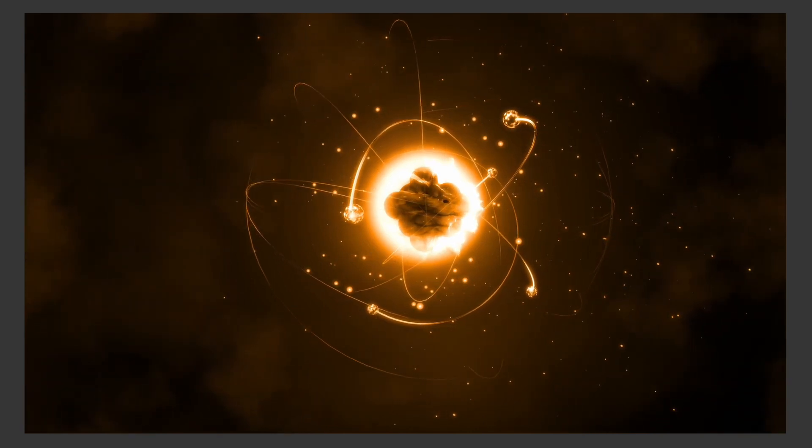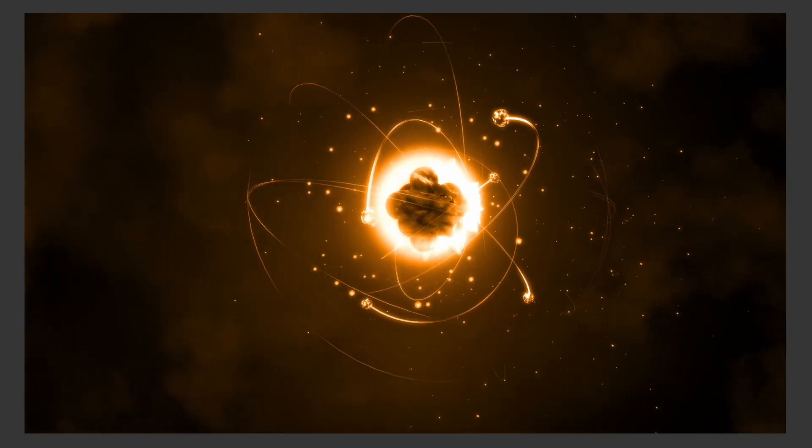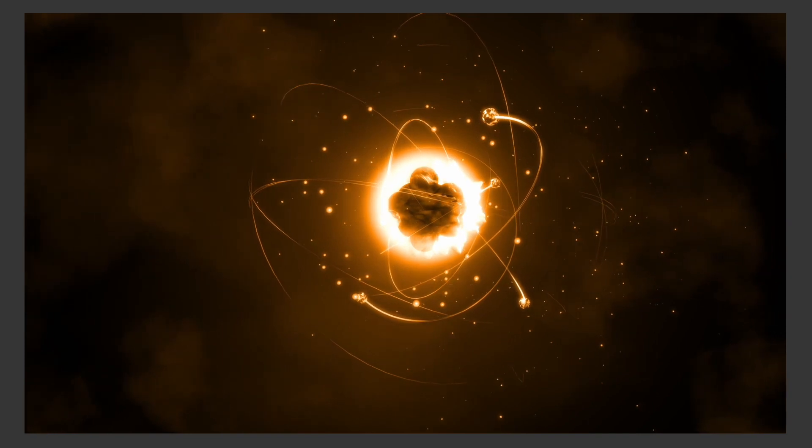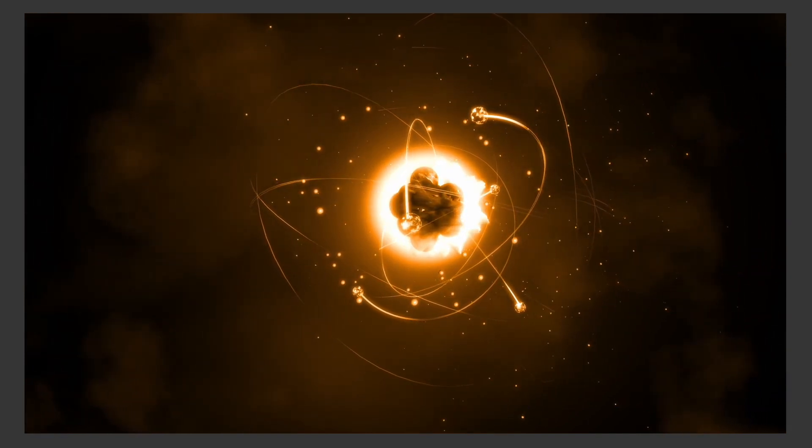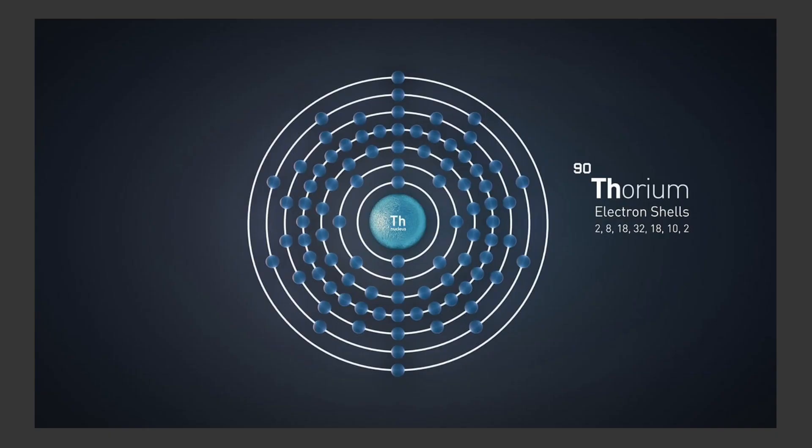An atom is the smallest unit of matter that retains the properties of an element. It consists of a nucleus, composed of protons and neutrons, surrounded by a cloud of electrons. Here's an explanation of the key components and terms associated with atoms.